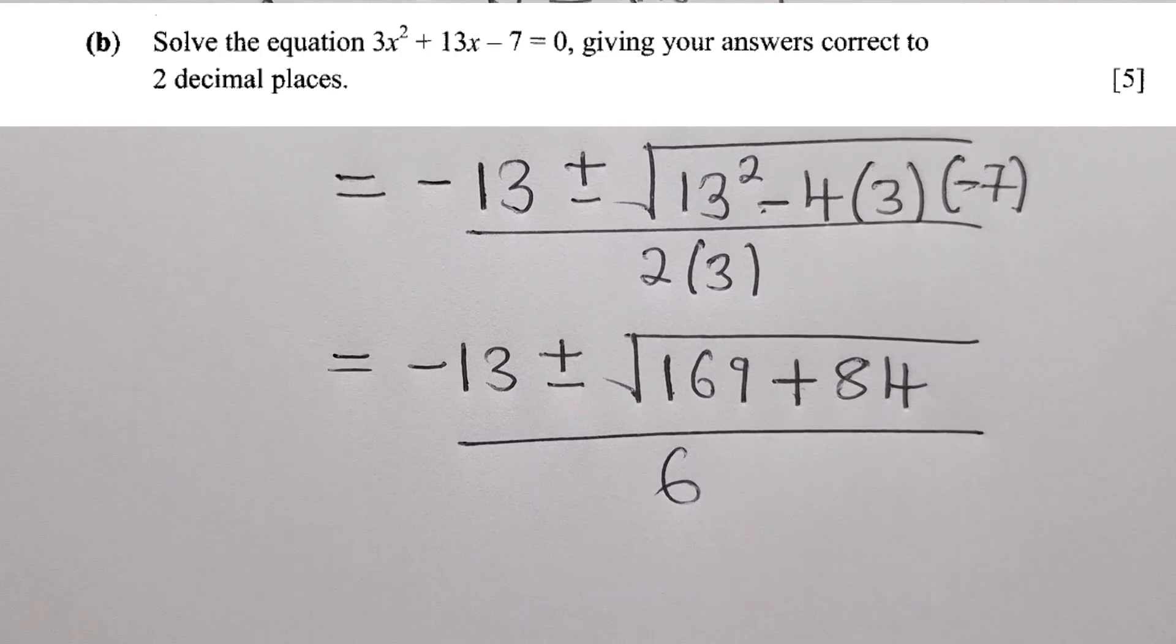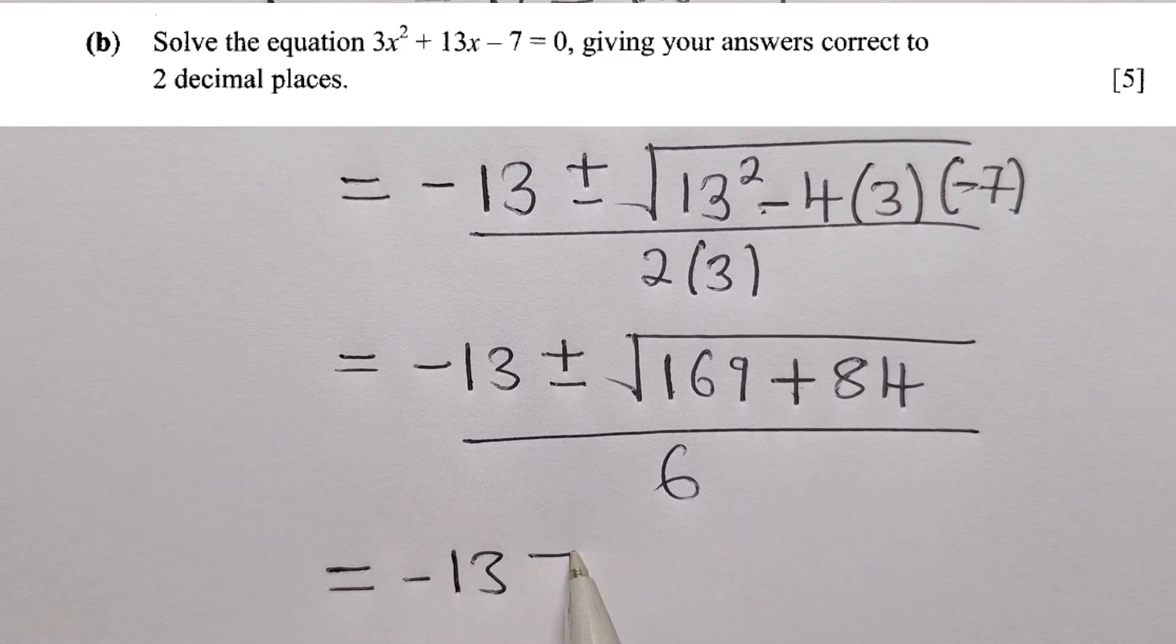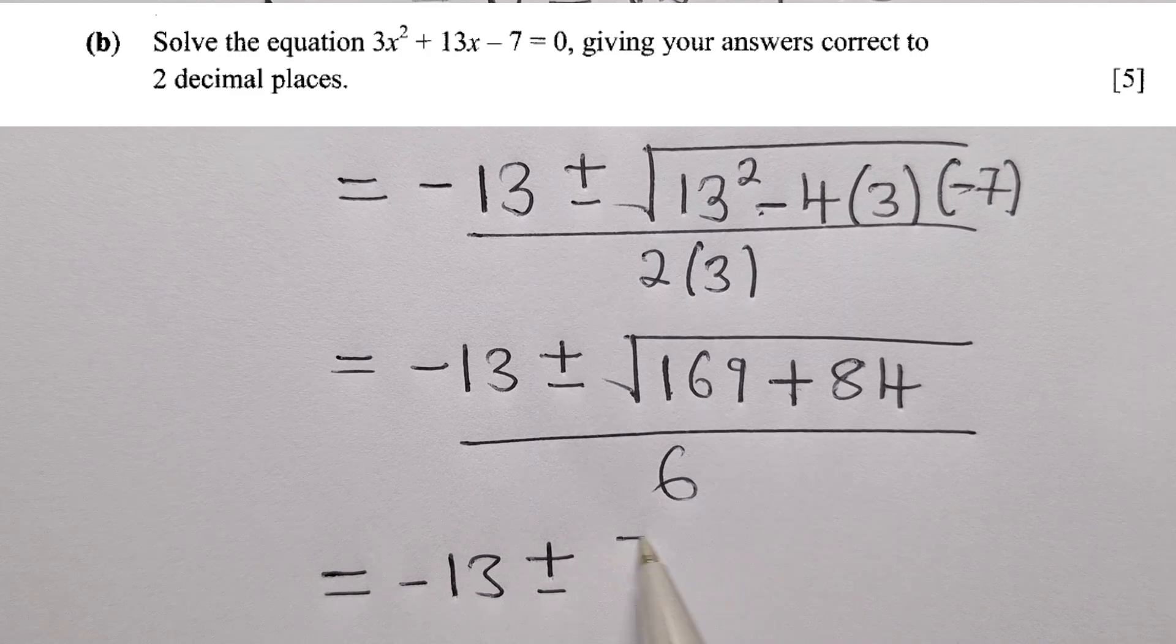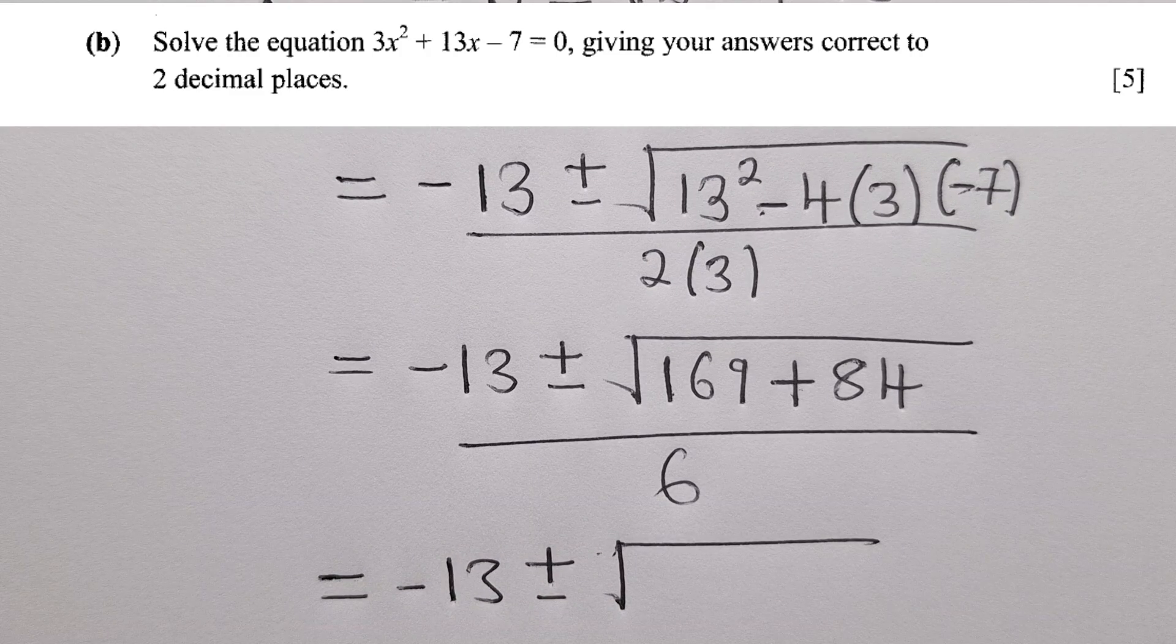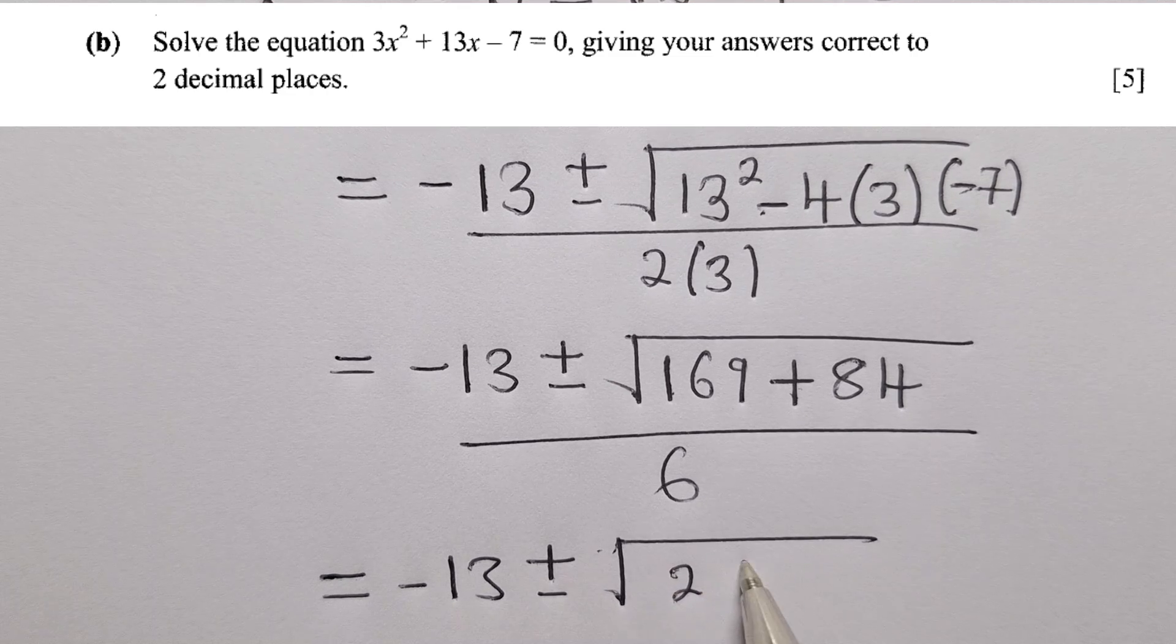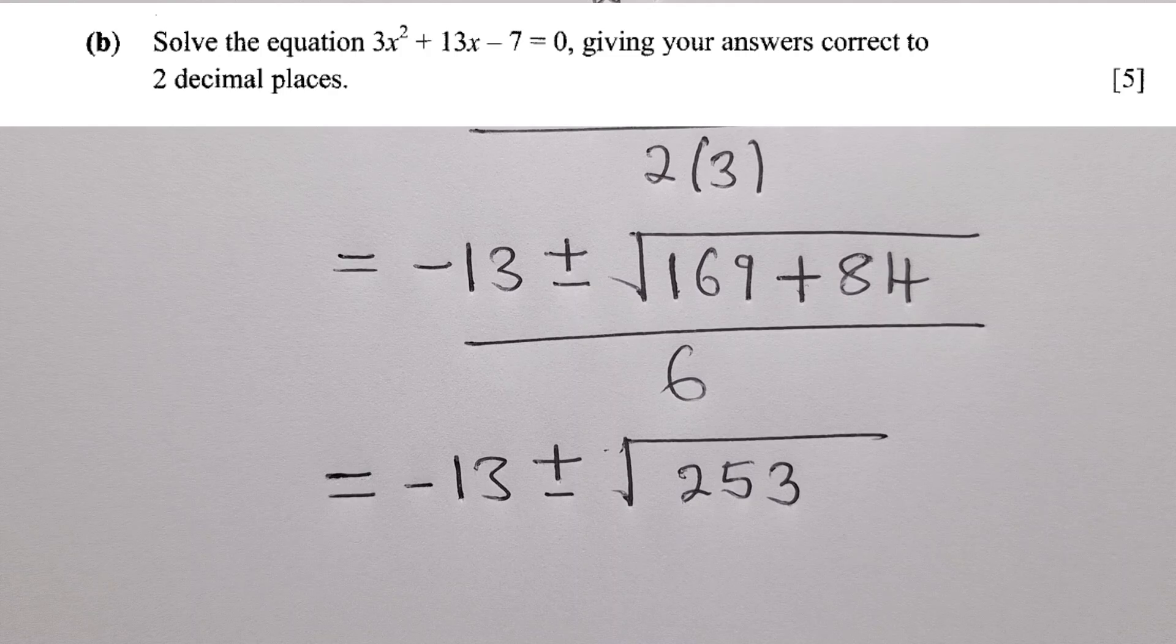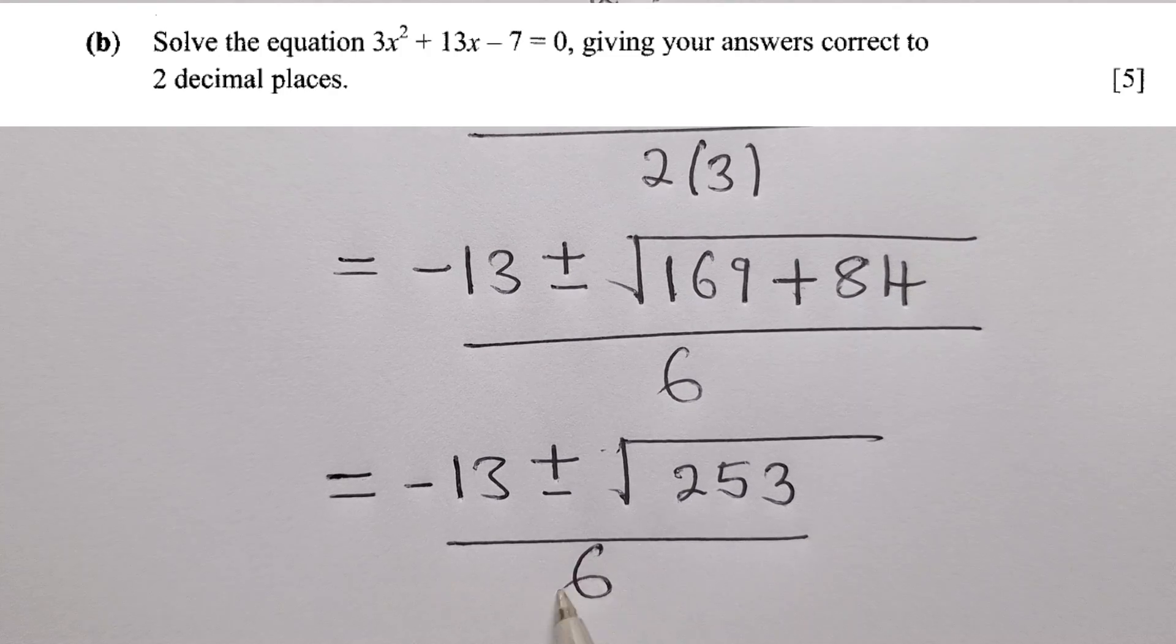So clean up inside there, the root. So we shall have negative 13, plus or minus, square root over 169 plus 84. This is giving us 253. So 253 over 6.